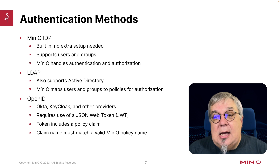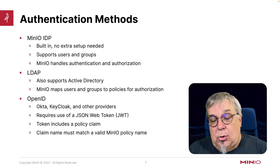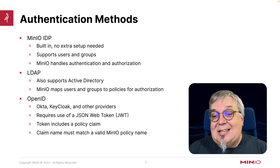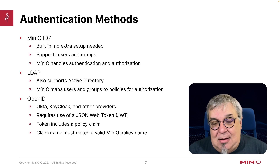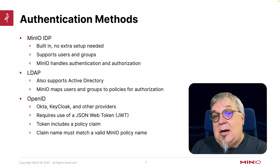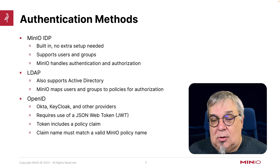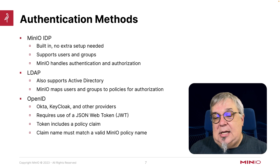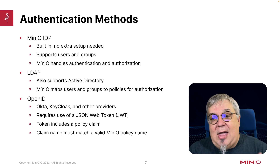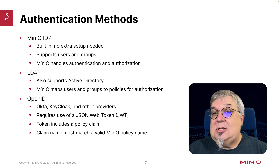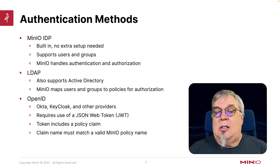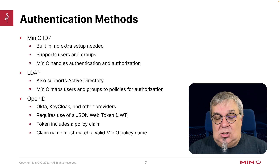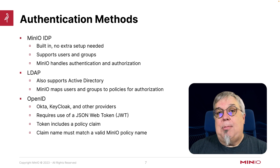In the case of OpenID, you're going to be using a JSON web token — a JWT. In that token, there needs to be a policy claim. The claim name needs to match a valid MinIO policy name, or else the login won't work. The benefit of OpenID — things like Okta and KeyCloak — is that if that policy name exists in MinIO, there's no additional work to be done on the MinIO side. With LDAP, you need to actually do the mappings of the users and groups in LDAP to the policies in MinIO.